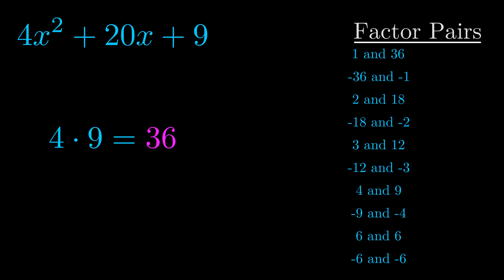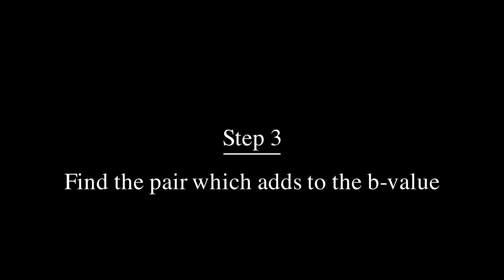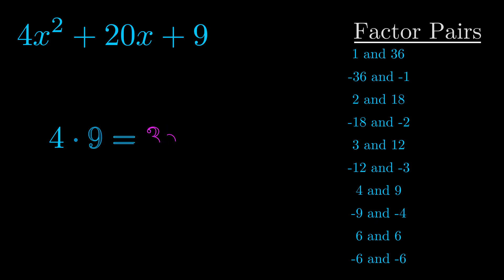Now once you have these factor pairs, the goal is to find which of these pairs adds to the b value. The b value is the coefficient on the x term. That's the middle term, the one that we haven't done anything with yet. And really this is the only factor pair that we need.